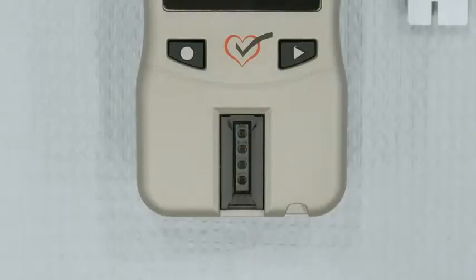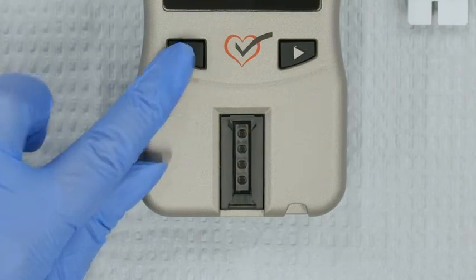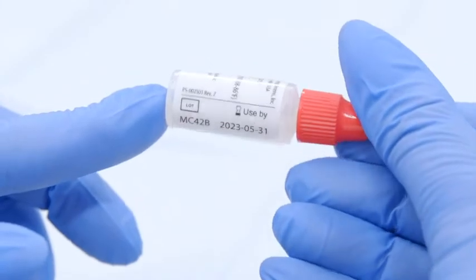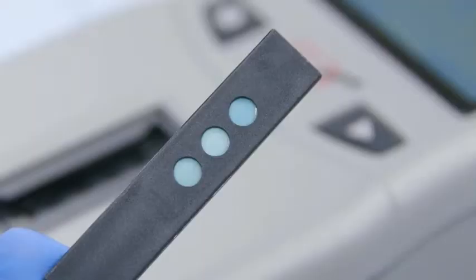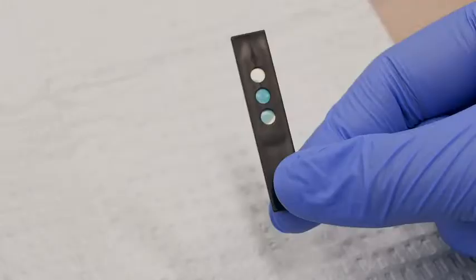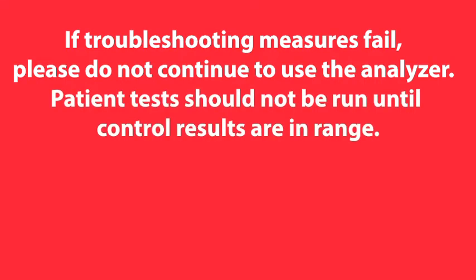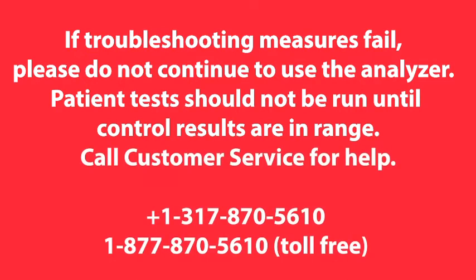If your level 1 results are within range, press Enter to move on to the level 2 control test. Use new test strips and the level 2 vial of control solution. If your results are not within range, check the back of the lipid panel test strip to make sure that the three circles are completely colored. If they are not completely colored, you might not have applied enough control solution. See the quality control testing section in the CardioCheck Plus version 1.12 user guide for more troubleshooting tips. If troubleshooting measures fail, please do not continue to use the analyzer. Patient tests should not be run until control results are in range. Call customer service for help.